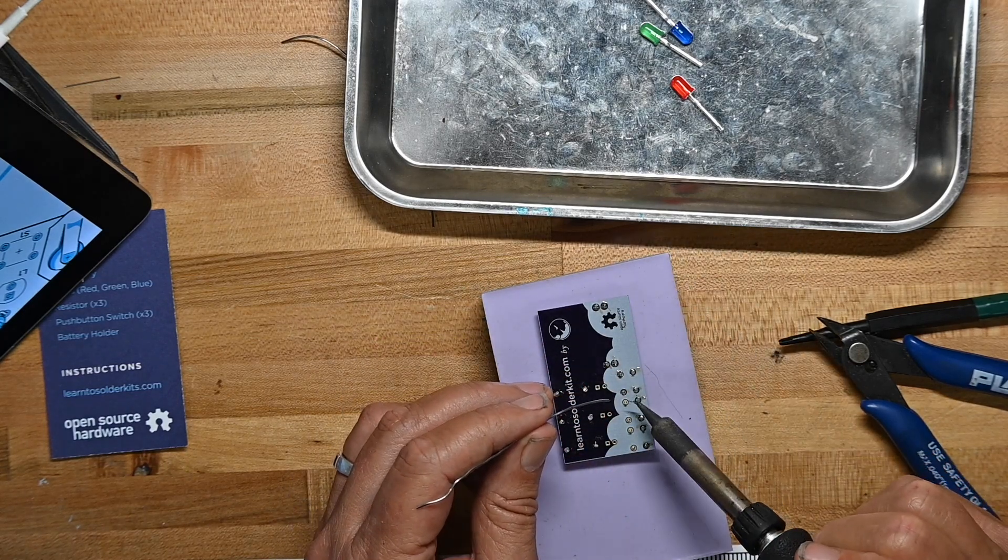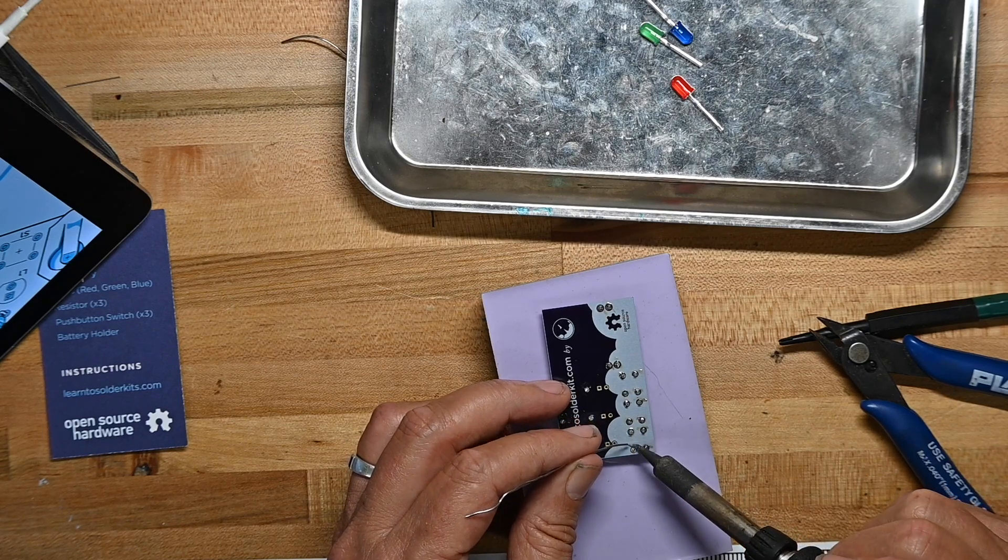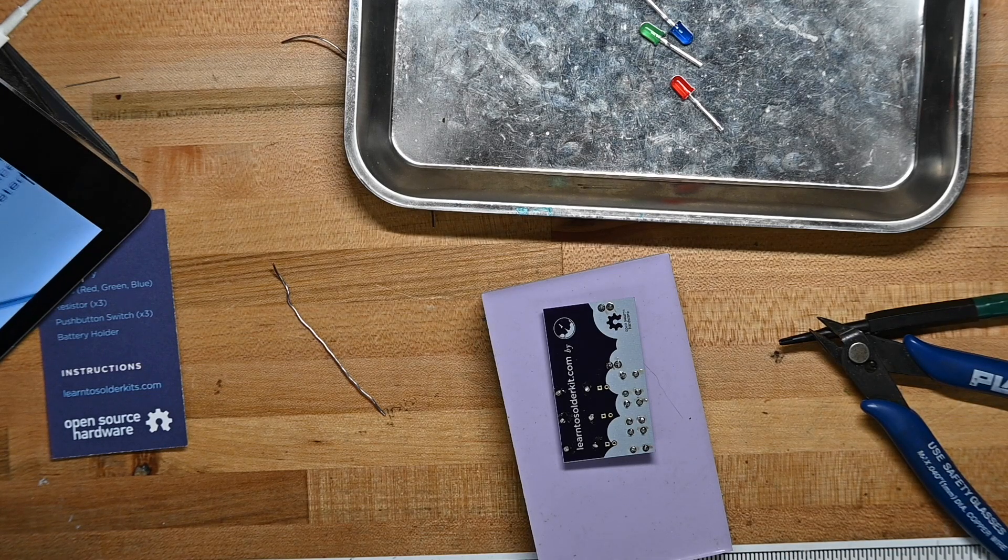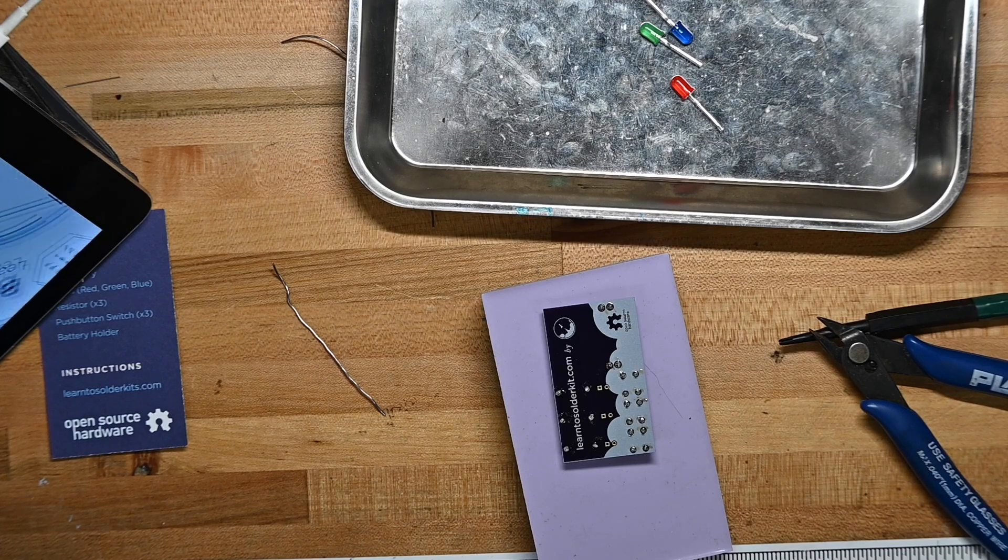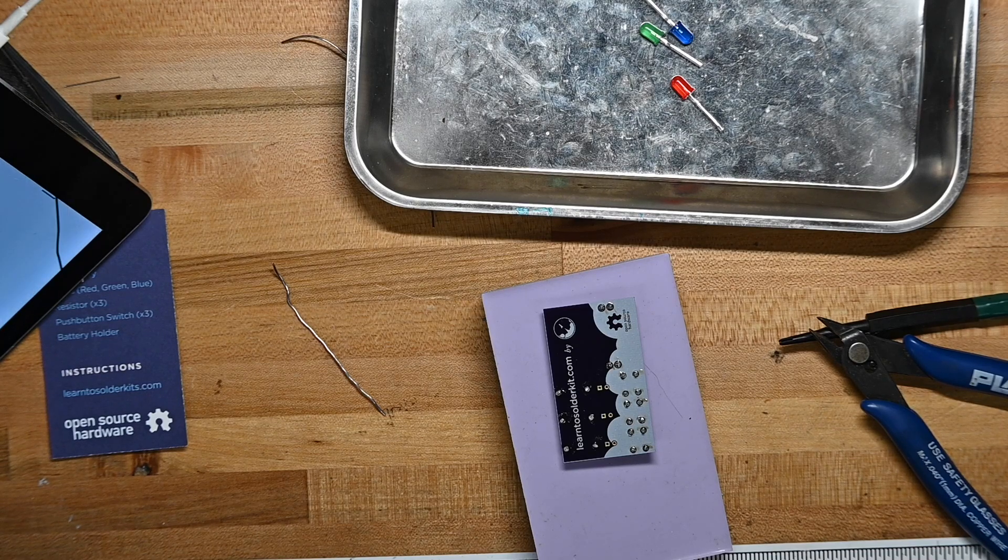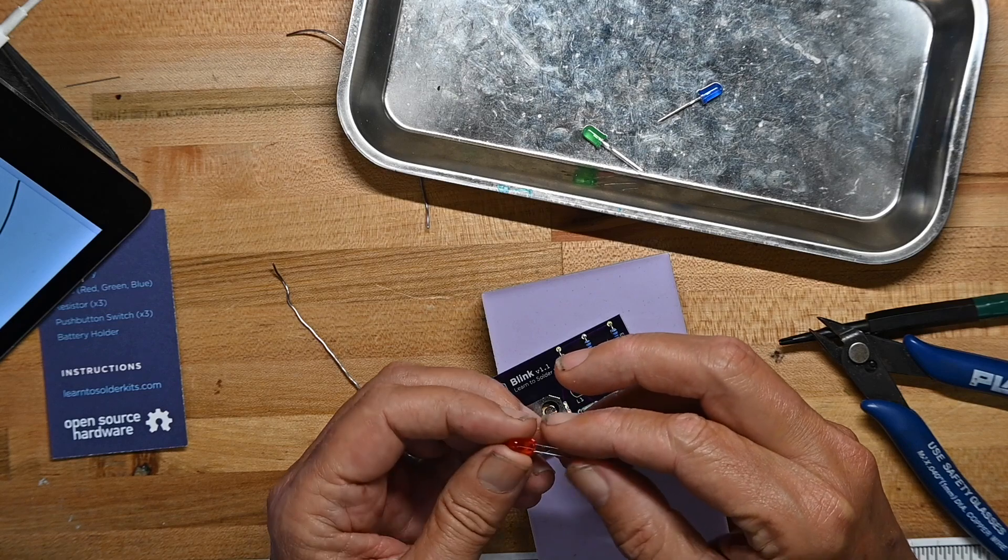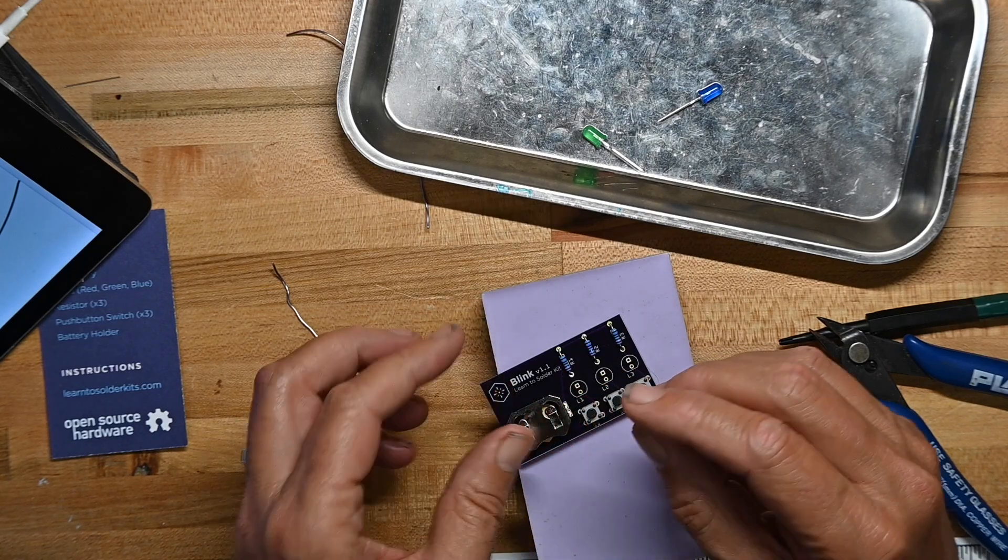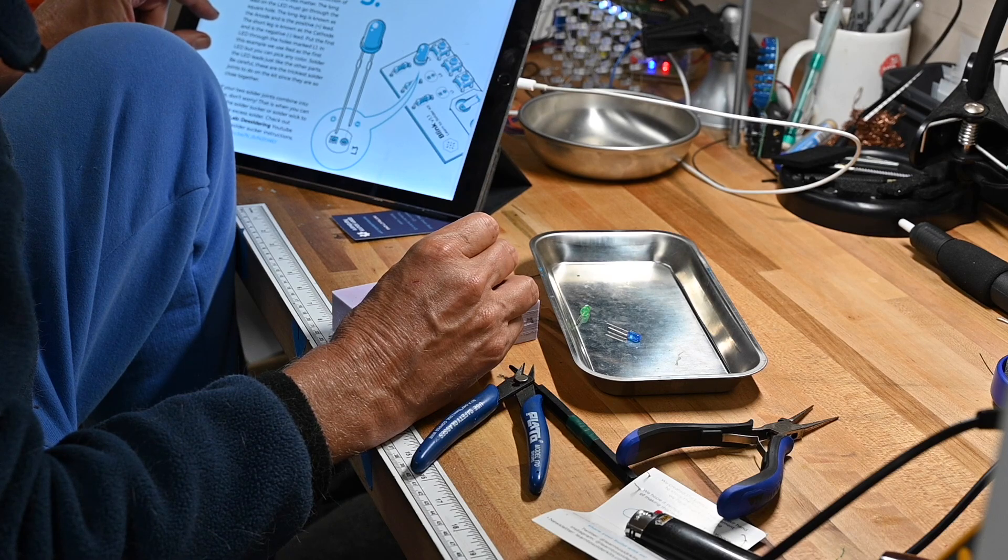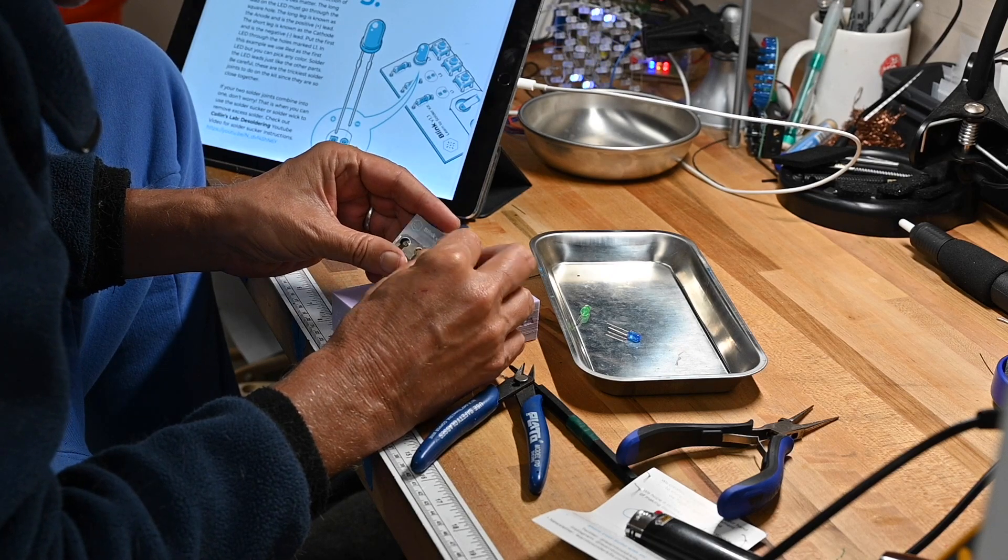Now as I'm soldering these switches down, one thing I don't see is there isn't a schematic or even a simple theory of operation. Would have been nice to have that too. The young builder may not understand it all but that's not the point - the point is to expose them to it. They don't care what color you go first with, so I'm just going to put all three of them on.